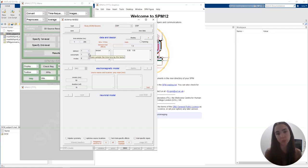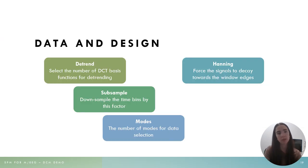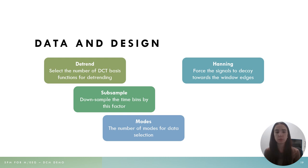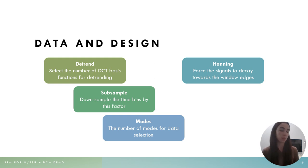There are a few more options we can choose from here — again, if you don't know what they are, just hover over them with your mouse. We can select the number of DCT basis functions for detrending, choose to downsample the time bins by some factor, and choose the number of modes for data selection. By default we use linear detrending (detrend equals one), no subsampling (also one), and eight eigenmodes for data selection. You can also choose to apply a Hanning window, which forces the signals to decay towards the window edges.